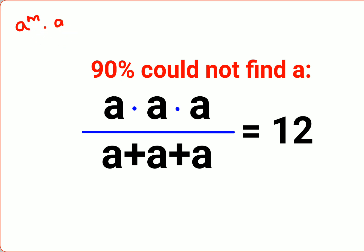So here since there is no index, it's obvious that the index is supposed to be 1. So basically you can write a raised to 1 plus 1 plus 1 upon, in the bottom we'll take a outside, so you're left with what, 1 plus 1 plus 1 equals to 12.